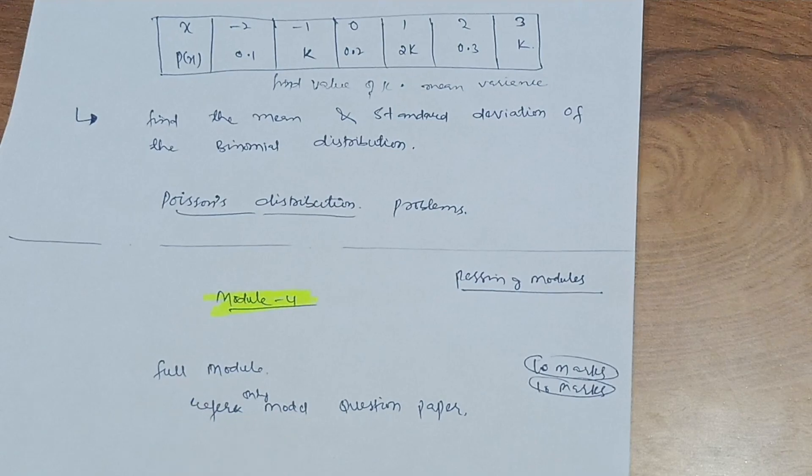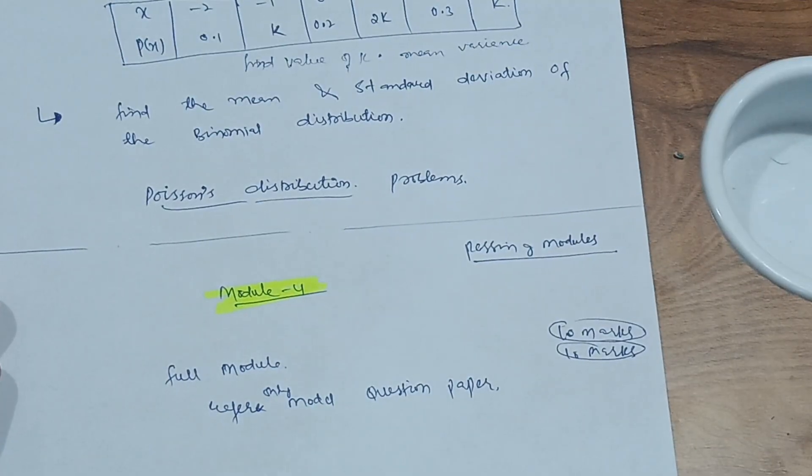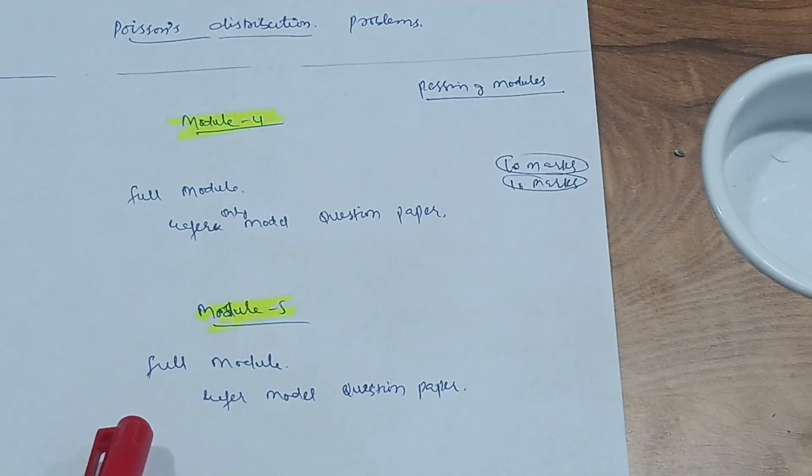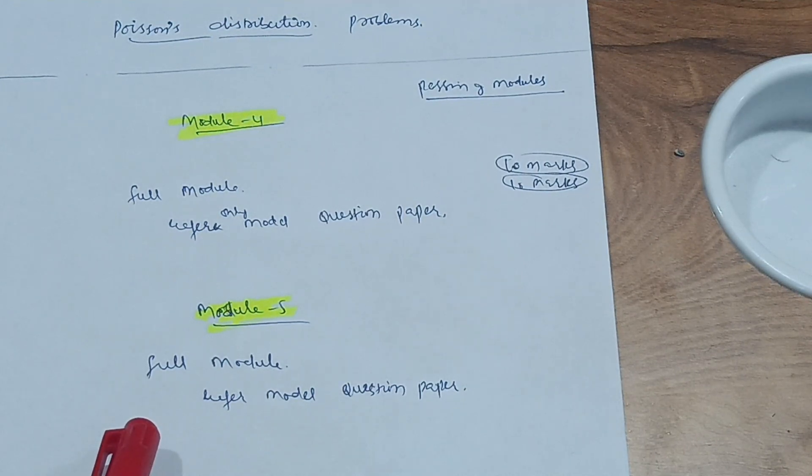Then same in module 5, friends, you have to go through the full module as it is a very simple module. Numerical based module, you have to just put the values. And also in module 4, there are some equations which you have to solve accordingly.